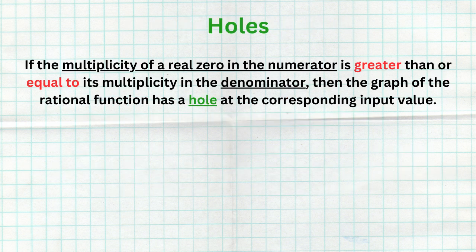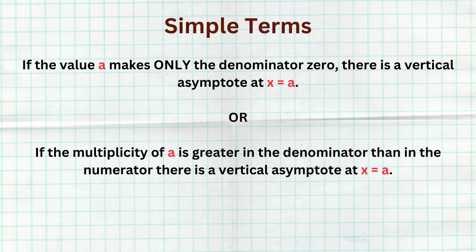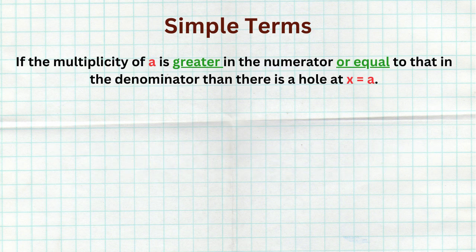Now let's talk about a hole. If the multiplicity of a real zero in the numerator is greater than or equal to its multiplicity in the denominator, then the graph of the rational function has a hole at the corresponding input value. To summarize, think about three different paths: if you have an x value that makes only the denominator zero and does not make the numerator zero at all, then you have a vertical asymptote at that x value. However, if you have common or shared factors between your numerator and denominator, you've got to look at the multiplicities. If the multiplicity of that zero is greater in the denominator, that produces a vertical asymptote. But if the multiplicities are equal or greater in the numerator, that produces a hole.